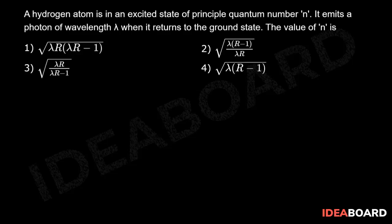A hydrogen atom is in excited state of principal quantum number N. It emits a photon of wavelength lambda when it returns to the ground state. The value of N is?